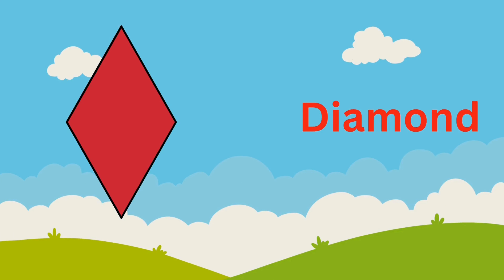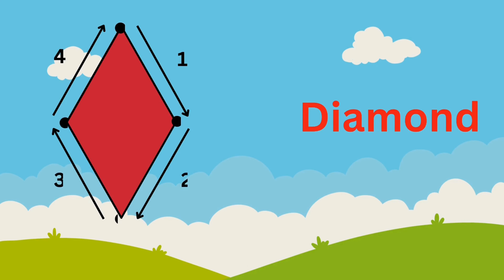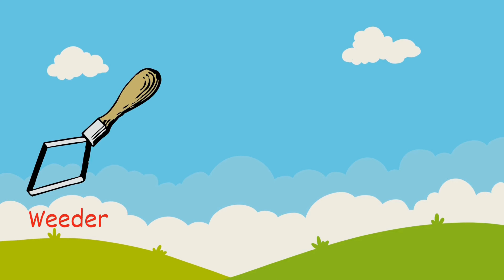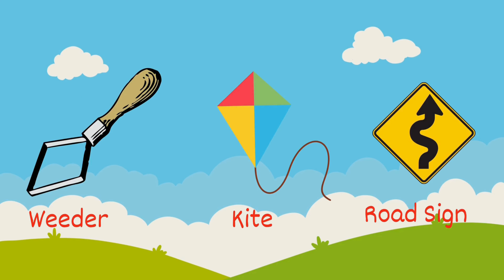The next shape we have is diamond. A diamond has four sides and four corners. Let's see which objects we have in our surroundings which are diamond in shape. Weeder, kite, road sign — they are diamond in shape.